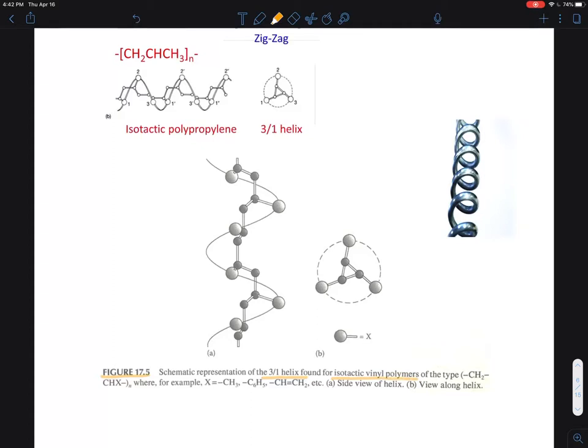the figures shown in Figure 17.5. This is a 3/1 helix found in isotactic vinyl polymers of this kind. They include polyethylene and polypropylene,